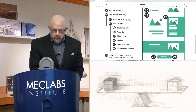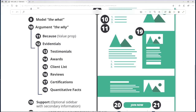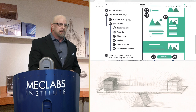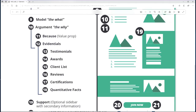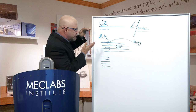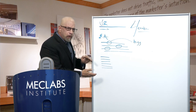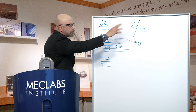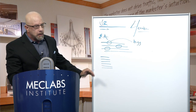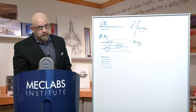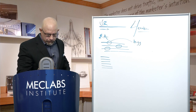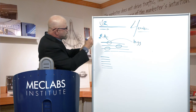But do not think you've got number 13 simply because you slapped some testimonials on your site. Awards are a powerful and compelling way to provide evidential — to provide evidence for your argument. Sometimes the list of clients, sometimes reviews, certifications, quantitative facts. This is the place in your site where you bolster your evolutionary argument and your ultimate reason with true and powerful reasons.